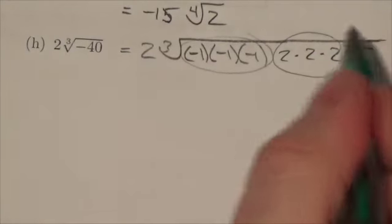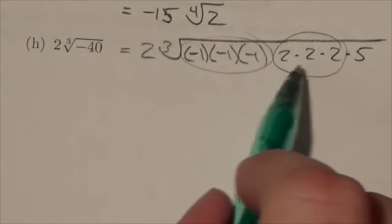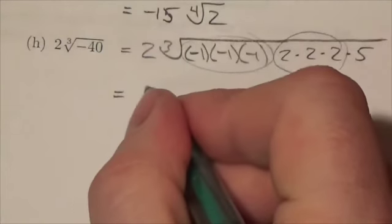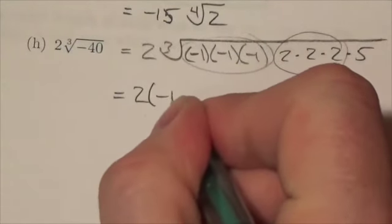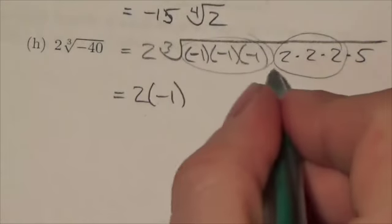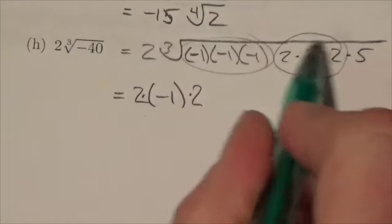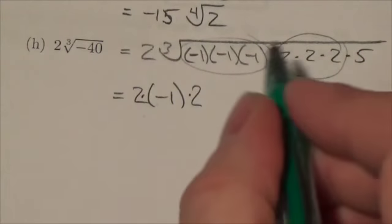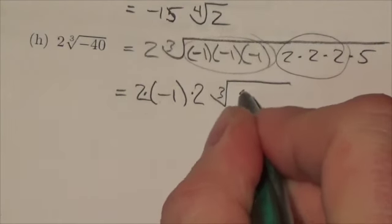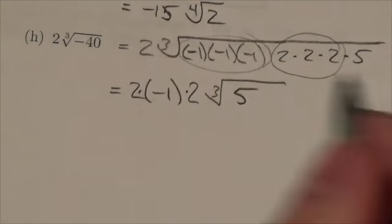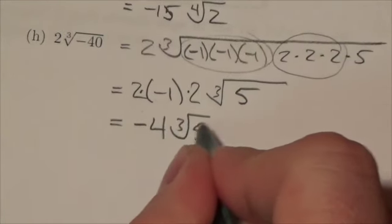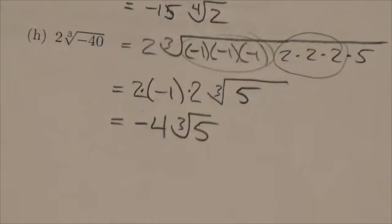So now, I'm going to take out a representative of those three factors of 2 and pull that out front. So here's what's going on here. I've got a 2 out there initially. I'm going to pull out a representative of that group of three negative 1s. And I'm going to multiply by the 2 that I pulled out because of that triplet of 2s under the radical symbol. What I'm left with is a 5 that I can't do anything with. And so what I've got here is negative 4 times the cube root of 5 when I multiply those all out in front.